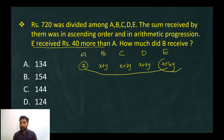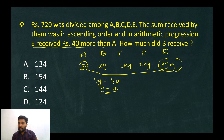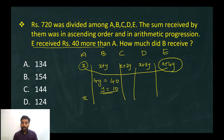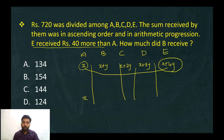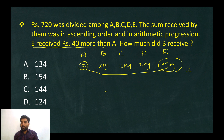The difference between e and a is x plus 4y minus x, which equals 4y. Since e received Rs. 40 more than a, 4y equals 40, so y equals 10.